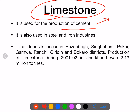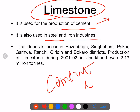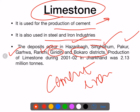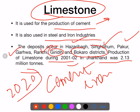Limestone is used in the production of cement and also in the steel and iron industry. Limestone deposits in Jharkhand are found in Hazaribag, Singhbhum, Pakur, Garhwa, Ranchi, Giridih, and Bokaro districts. Production of limestone during 2001-2002 was 2.13 million tons — current data to be updated.